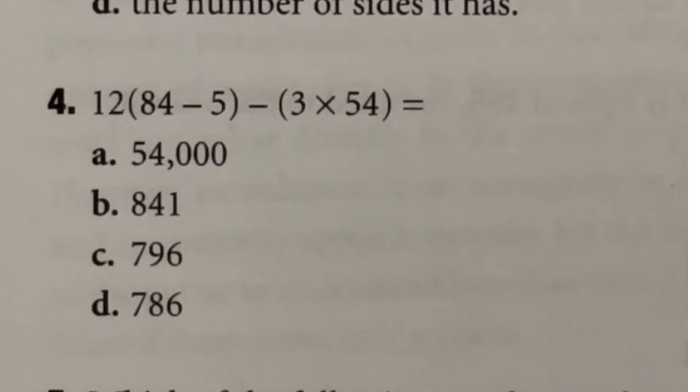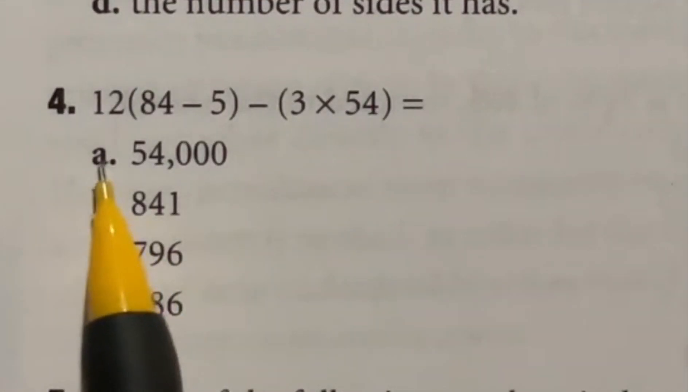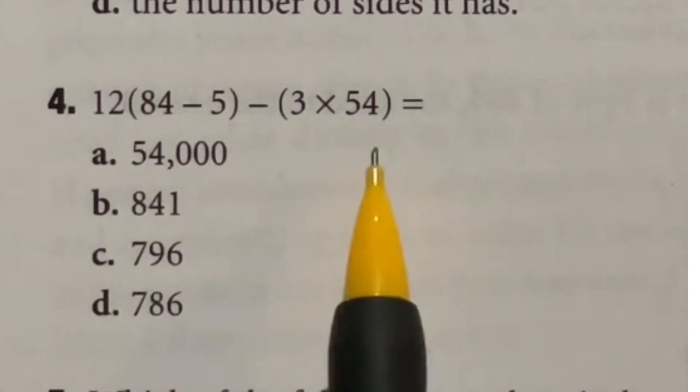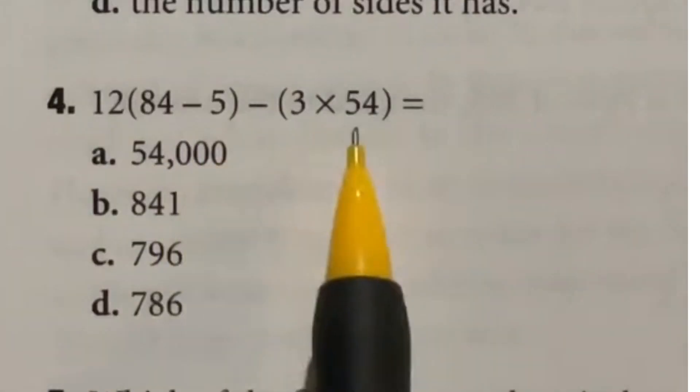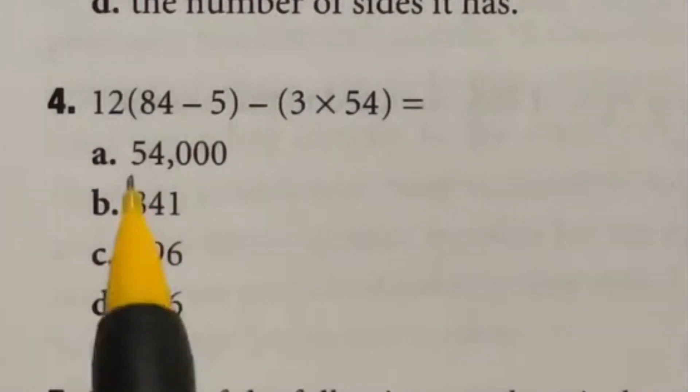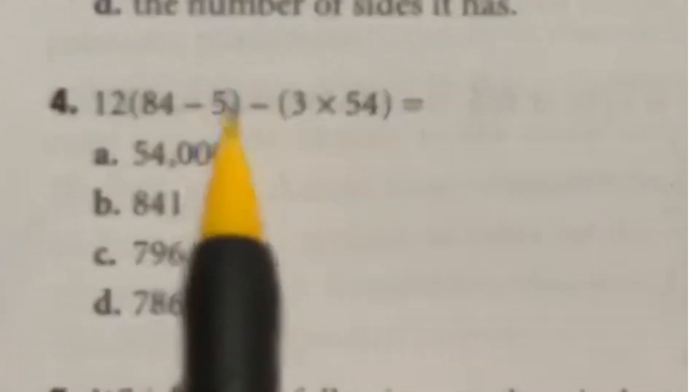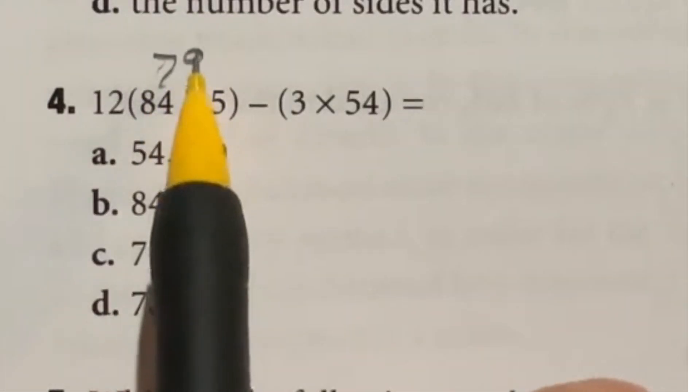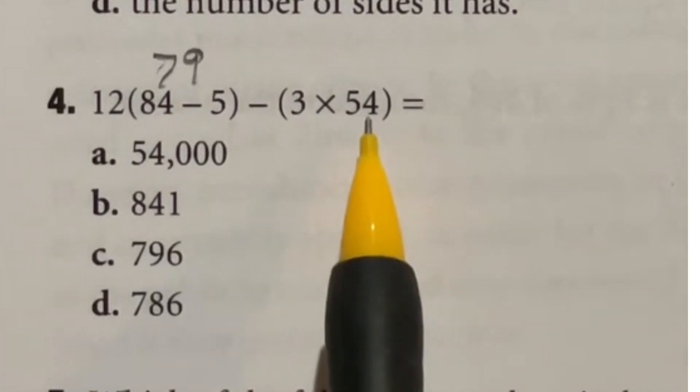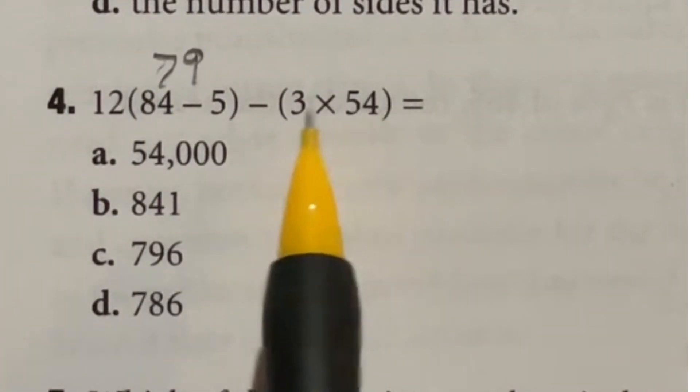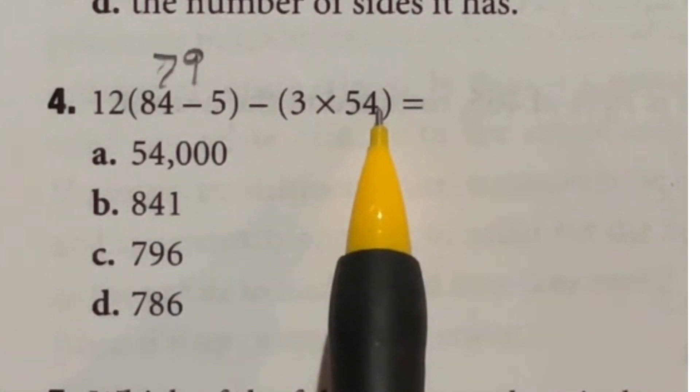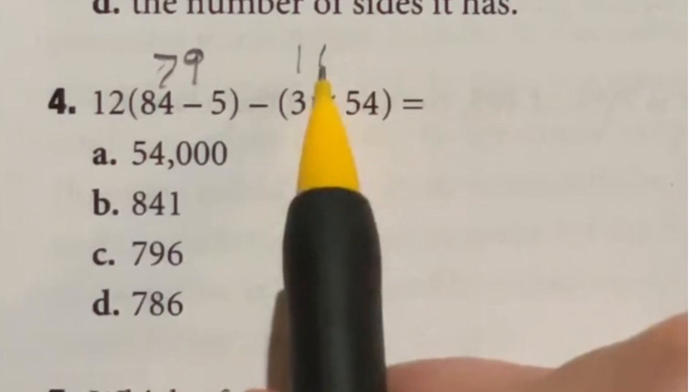So number four can actually be a little tricky when you realize that you don't get to use a calculator. So let's break this down. You always do order of operations, the items in parentheses first. So 84 minus five is going to give us 79. Then we have the three times 54 over here. Well, I know three times 50 is 150. Three times another four would be adding another 12. So 150 plus 12 means that this should be 162.